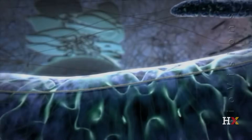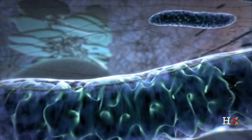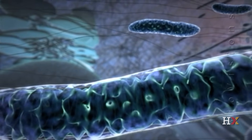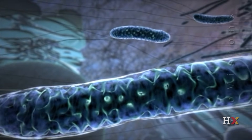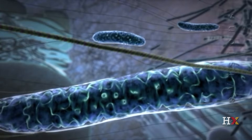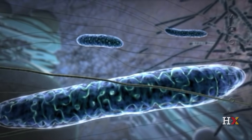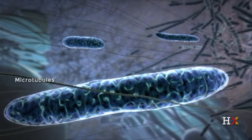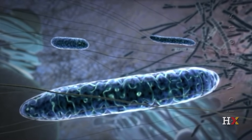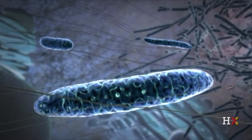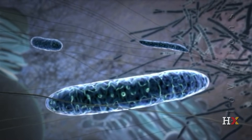In cells, mitochondria are distributed near sites where ATP and other mitochondrial metabolites are in high demand. Mitochondria move alongside skeletal structures such as microtubules and can undergo dynamic changes in shape, including both fusion with other mitochondria and division.